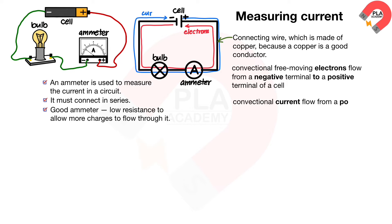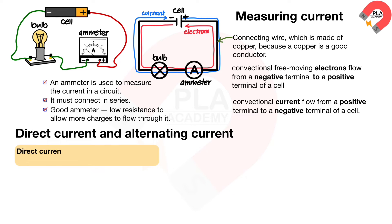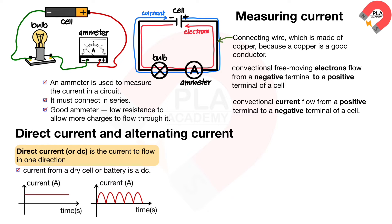While the conventional current flow from a positive terminal to a negative terminal of a cell. Direct current, or DC, is the current to flow in one direction. The current from a dry cell or battery is a DC. The graph showing the variation of current with time for direct current is shown on the diagram.